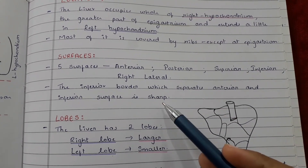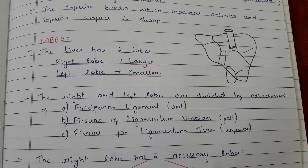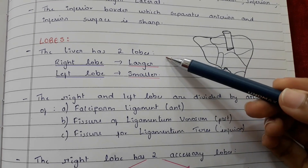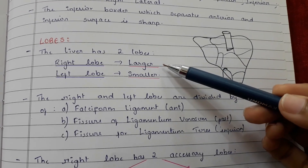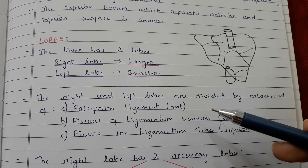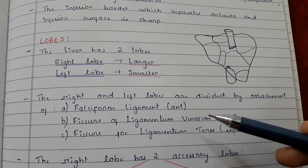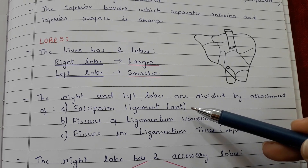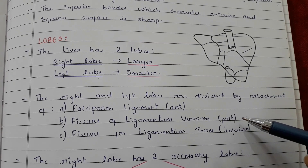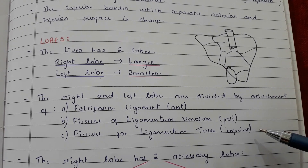The inferior border, which separates the anterior and inferior surface, is sharp. The liver has two lobes — the right lobe is larger and the left lobe is smaller. The right and left lobes are divided by the attachments of the falciform ligament anteriorly, fissure of the ligamentum venosum posteriorly, and fissure for the ligamentum teres inferiorly.